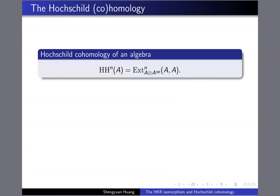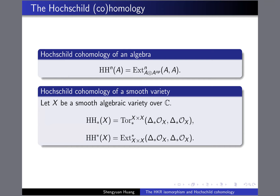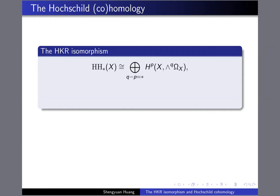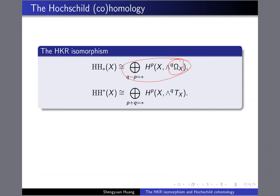This can be generalized to the variety case using the same definition. So A tensor A^op becomes X cross X, and delta is the diagonal embedding. The HKR isomorphism says that you can write the Hochschild cohomology explicitly in terms of — this is the Hom in some sense — and this is called the polyvector field.